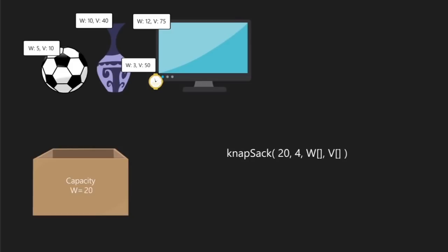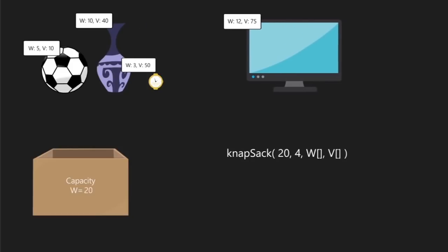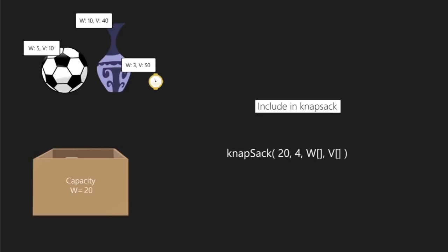Let's start solving the problem. Consider the last item, which is the monitor. There are only two cases. The first one: include the monitor in the knapsack, in which case we are left with a smaller sub-problem. The reduced capacity of the knapsack is 8, and we have three items to choose from. We need to choose from these items to get the maximum value that can be grabbed into this knapsack.